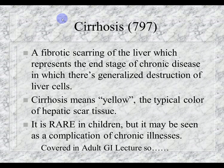Cirrhosis is on pages 797–798. This is fibrotic scarring of the liver representing end-stage chronic disease with generalized destruction of liver cells. The yellowing — jaundice — is the typical color seen in the sclera and skin. It's rare in children and usually due to a complication from another chronic illness. This is covered in GI adult content and will not be on the peds test.